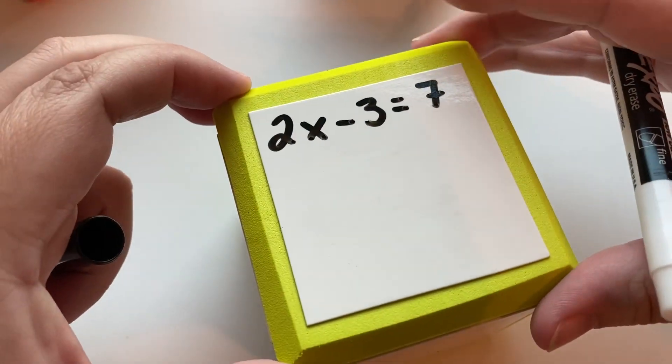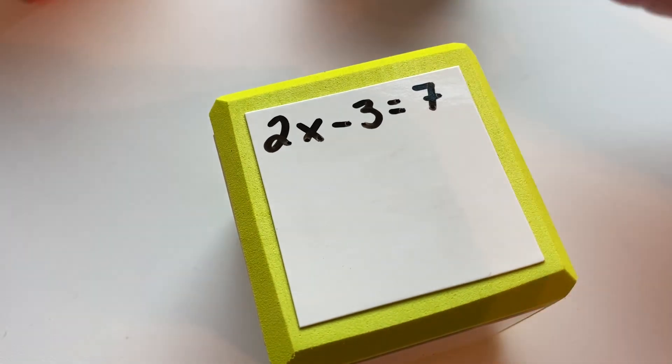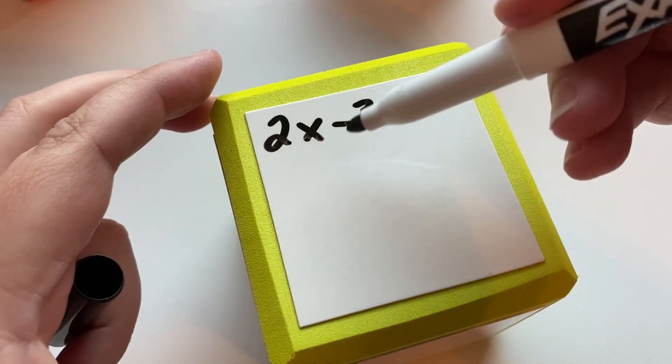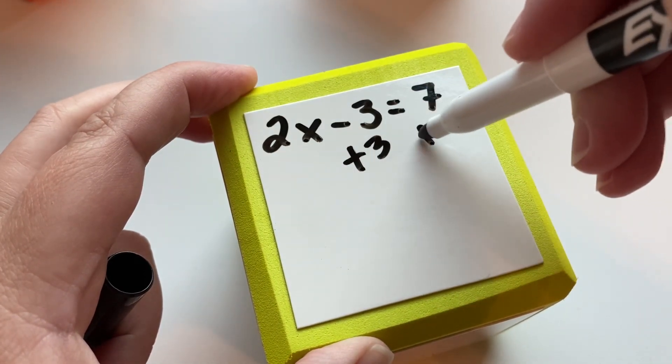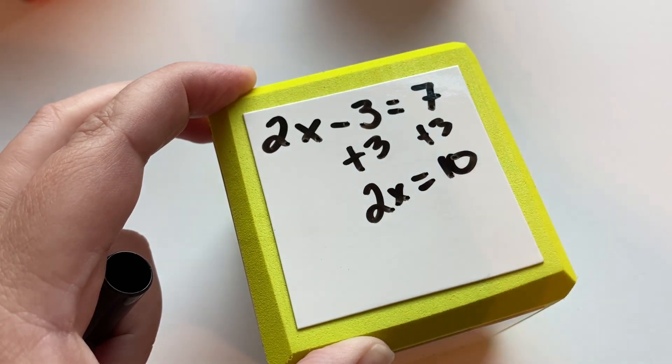So here we have two x's, two times x, minus three, equals seven. So we are going to start with the subtraction. We do the inverse operation, which will be plus three. Add that to both sides, and we get 2x equals 10.